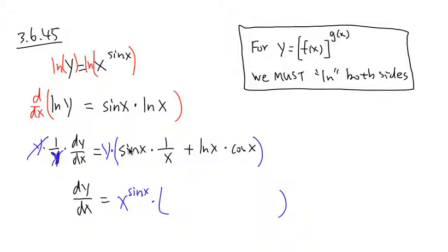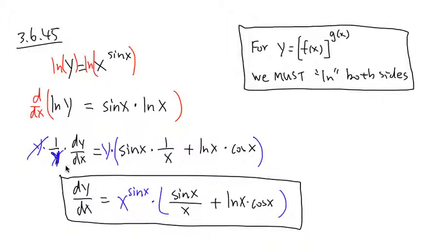On the first part, I can just put the sin x on the top. So this is going to be sin x over x. And on the second part, there's nothing much we can do. Plus ln x times cos x. And this is it.